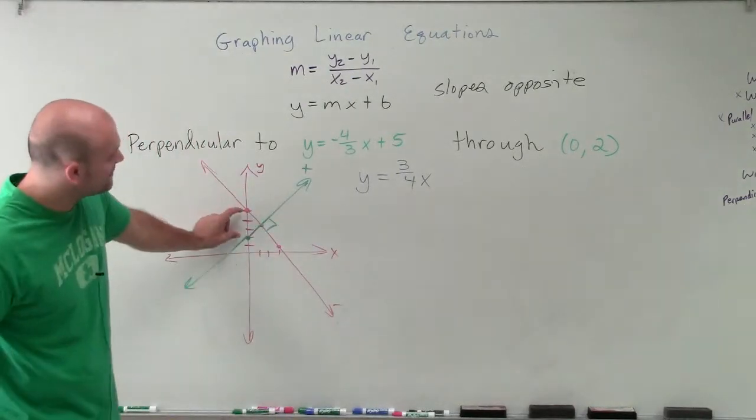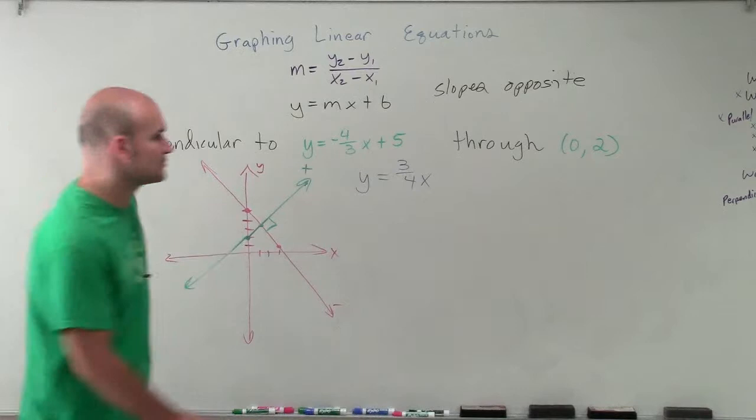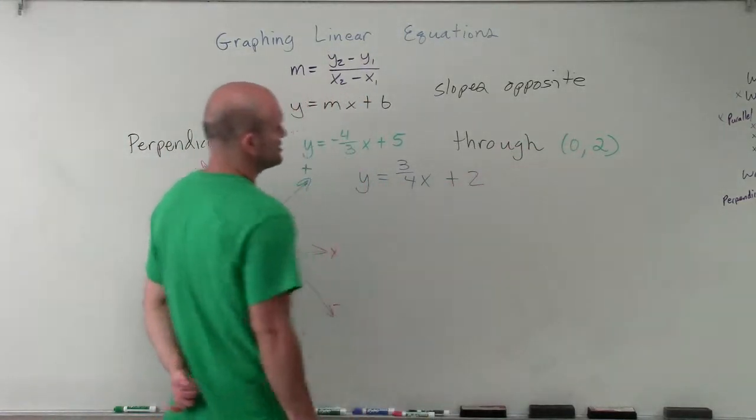And then they do not have the same y-intercept. This one has a y-intercept of 0, 2, which is actually given to us in the problem. So it would be 3 fourths x plus 2.